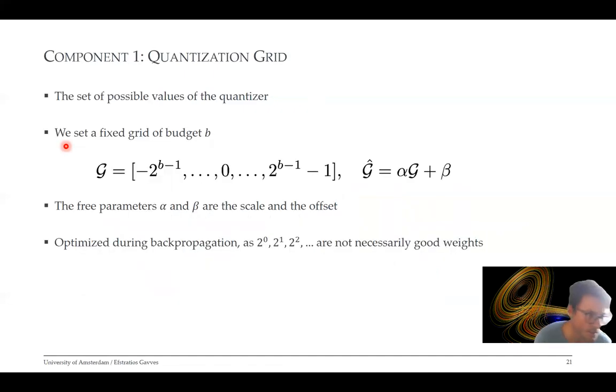In the first step, the quantization grid comprises a set of possible values for the quantizer. We set a fixed grid of budget, like we've got four bits. Then we generate the grid as in this array. Afterward, we scale up this grid and add some offset. This alpha and beta are the scale and the offset of the grid and allow us to fine-tune the specific types of values for weights that are optimal for our task. This is important because if we were to use the original grid, so 2 to the power of 0, 2 to the power of 1, 2 to the power of 2, these do not necessarily make up for good weight values.